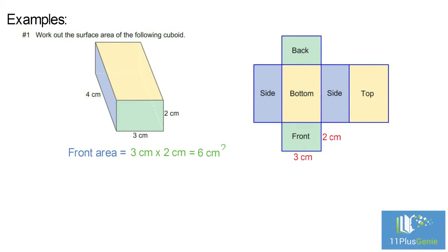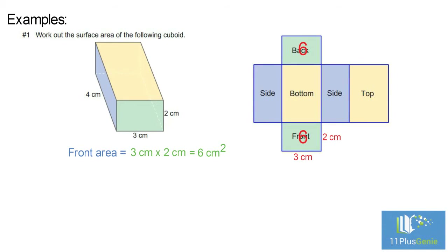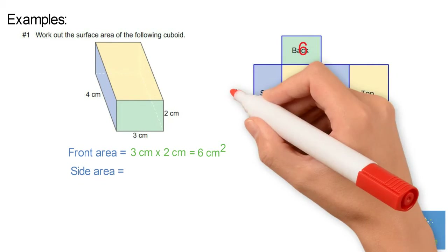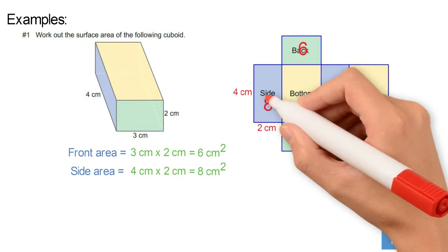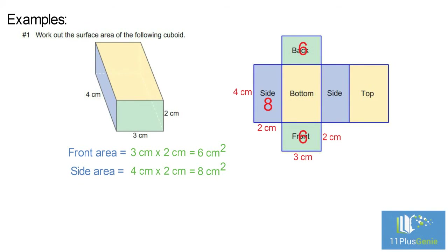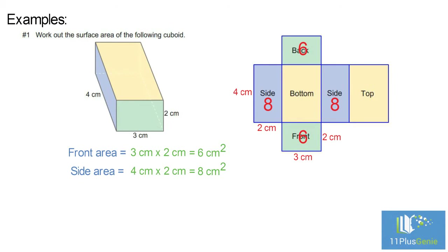The back face has the same area: area equals six centimeters squared. The area of the side face: four centimeters times two centimeters equals eight centimeters squared. The opposite side has the same area: area equals eight centimeters squared.